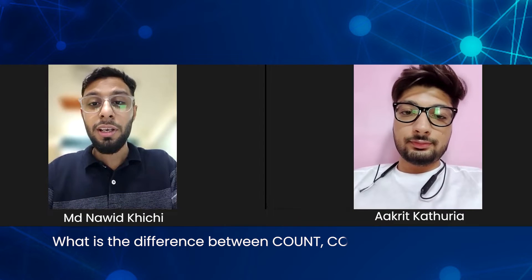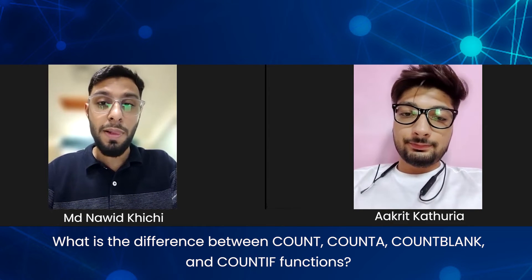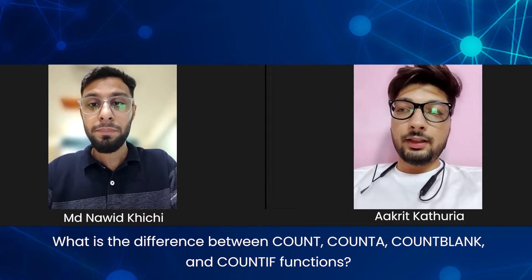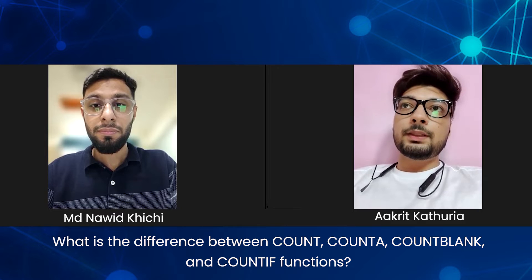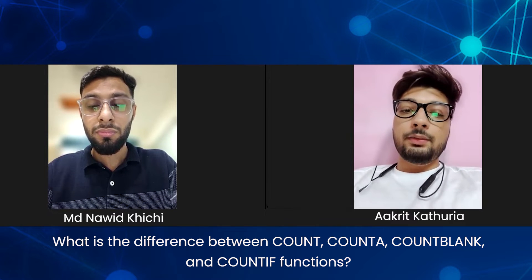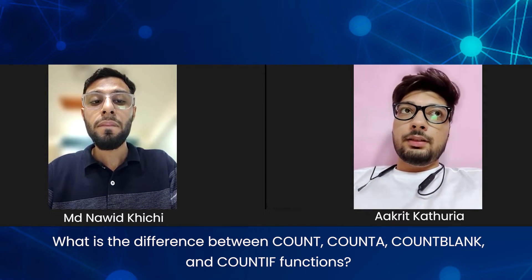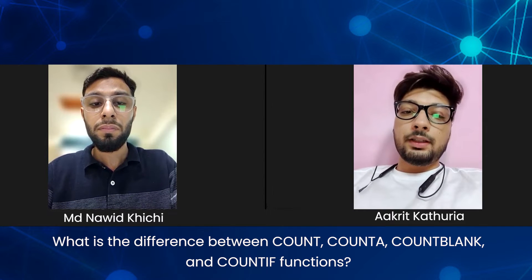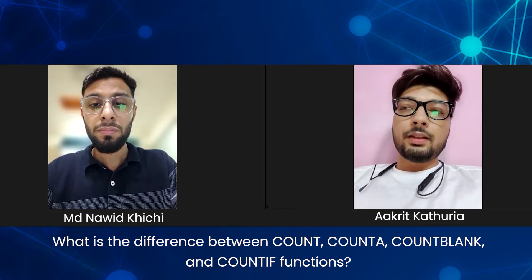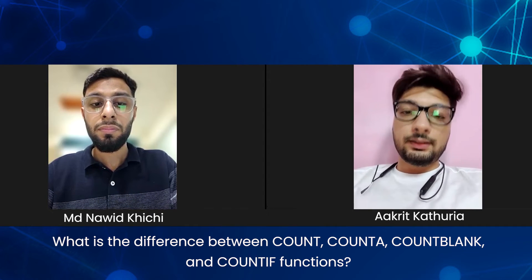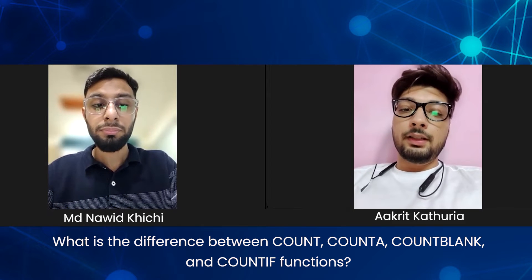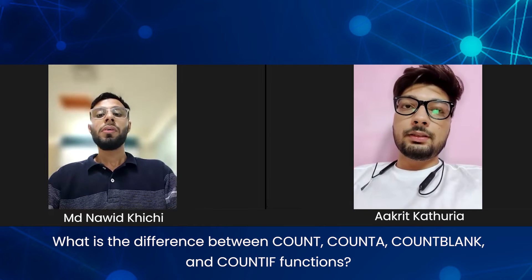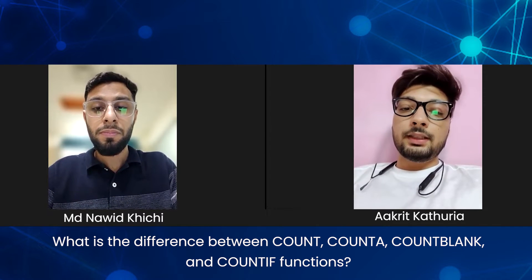What is the difference between COUNT, COUNTA, COUNTBLANK, and COUNTIF? COUNT works on a specified range and gives the count of numeric values. COUNTA works on filled cells — it neglects empty cells. COUNTBLANK only counts the blank cells in a specified range. COUNTIF first checks a condition, and if the cells in a specified range match those conditions, then it counts them.